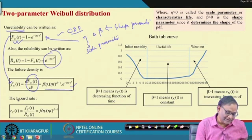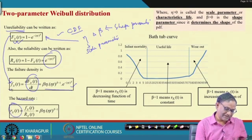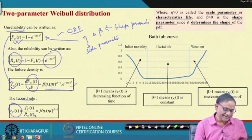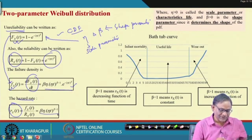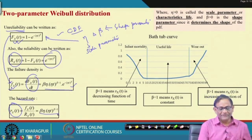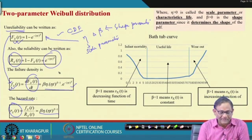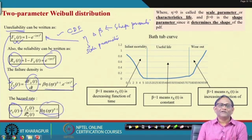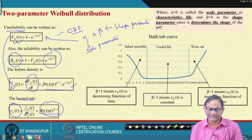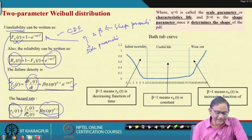Similarly, the hazard rate or instantaneous failure rate h(t) = f(t) / R(t). Since the e^(−η·t^β) terms cancel, the hazard rate function becomes: h(t) = β · η · (η·t)^(β−1). As noted, it has a very good relation with the bathtub curve.